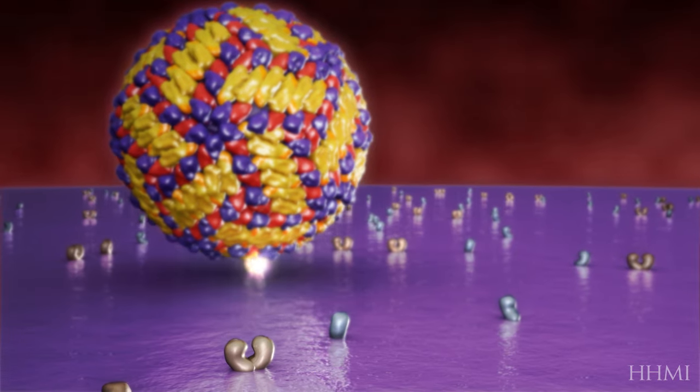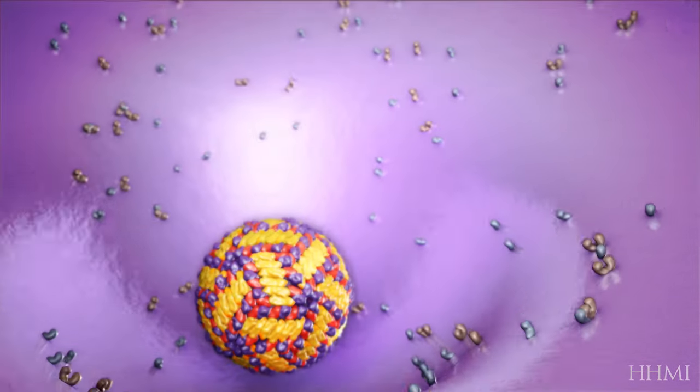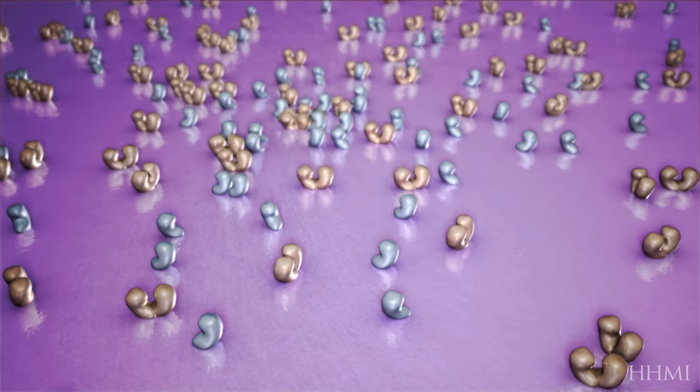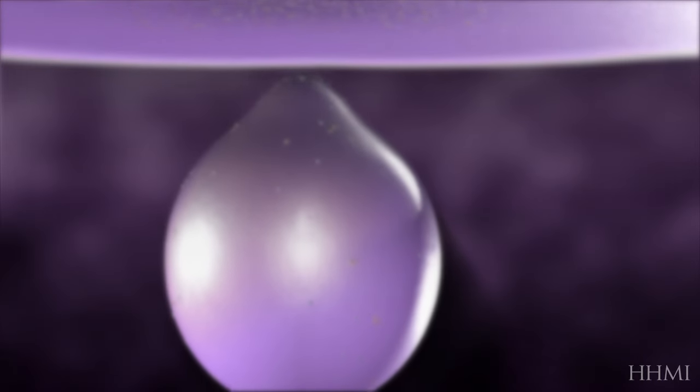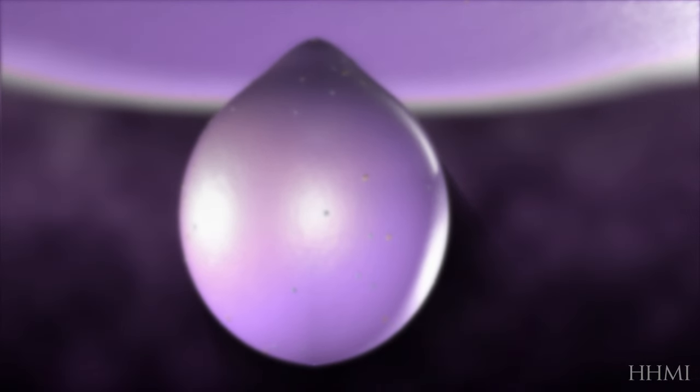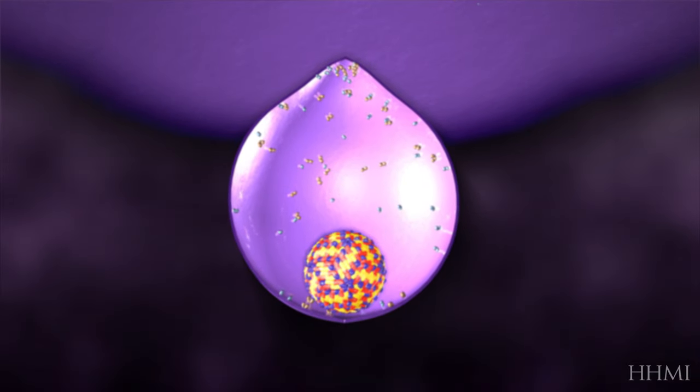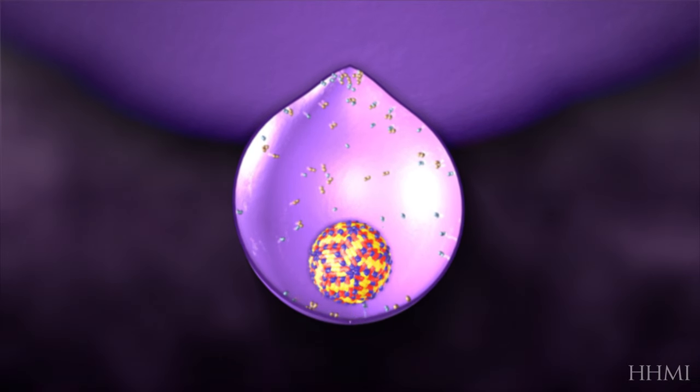The virus's envelope protein binds to the cognate receptor and triggers a cellular process called receptor-mediated endocytosis. The virus is internalized in a bubble-like structure called the endosome. When endosomes form, proton pumps lower the pH of the interior.